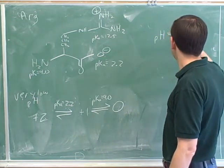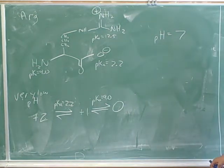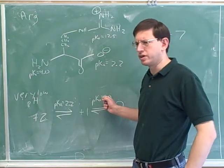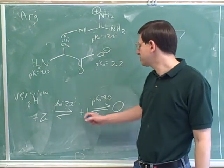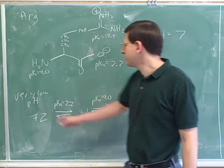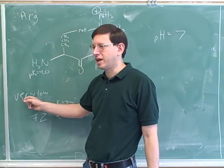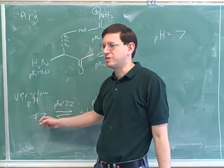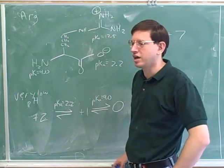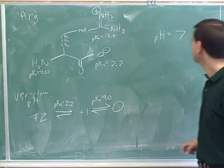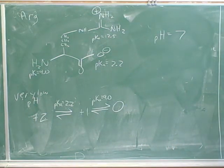Suppose the pH is 7 — what would be the net charge of the major species? A pH of 7 falls between 2.2 and 9.0, so the major species would be plus 1. When the pH is lower than 2.2, the plus 2 is the major species. When the pH is between 2.2 and 9.0, the plus 1 is the major species. When the pH is somewhat greater than 9.0, the zero form is the major species. So at pH 7, the species with the greatest concentration is the plus 1 form.